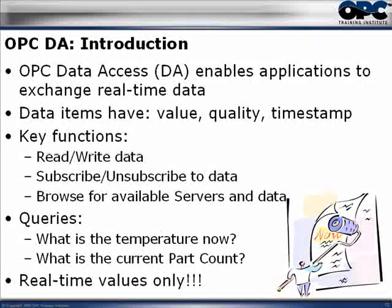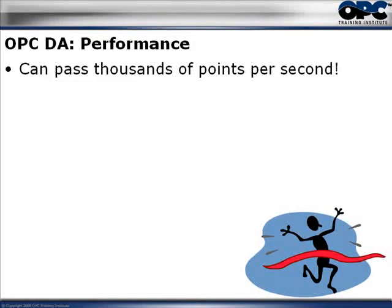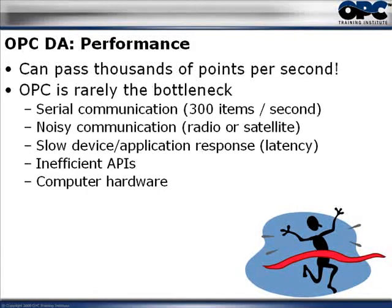So how fast is OPC anyway? OPC servers can pass thousands of points per second — in fact, some pass hundreds of thousands of points per second. But that doesn't necessarily mean much, because the bottleneck typically occurs elsewhere. For example, with serial communication you're typically going to see around 300 points per second. Once data gets into the OPC server you can send out hundreds of thousands of points per second, but the serial communication on the input side will slow things down.